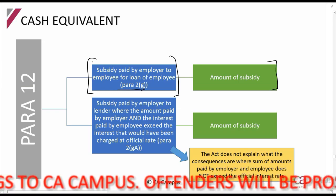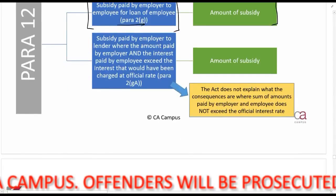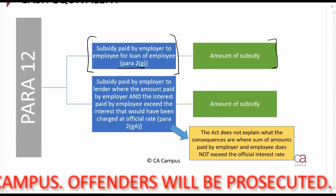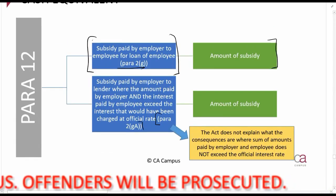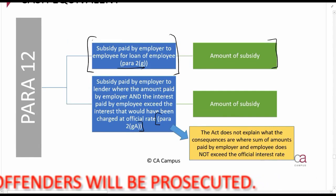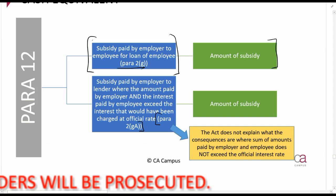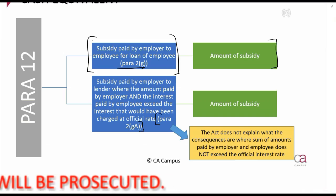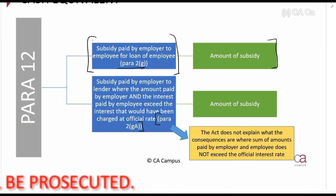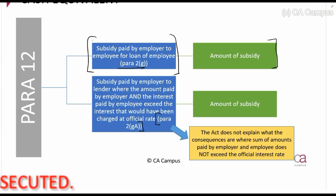Over the last couple of years a special section was added in paragraph 2g capital A. This section, to be honest, is not very clear — there are no examples really available out there of how it looks and how it works. But I'll explain to you basically what happens here.